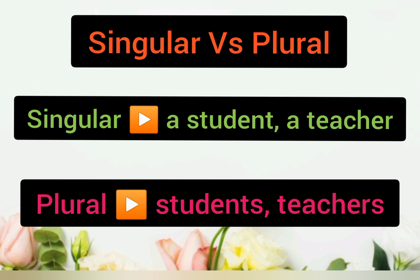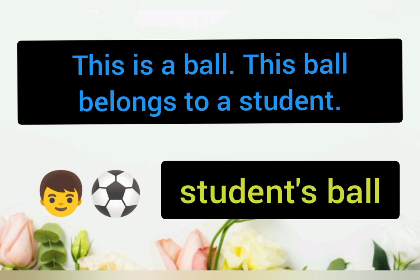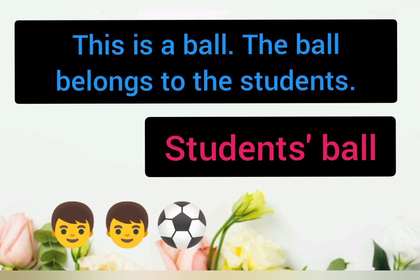Let's look at the example. This is a ball. This ball belongs to a student — kita nak kata bola ini kepunyaan satu murid — so we call it student's ball. How about if there are more than one students? So students, apostrophe, ball. Kita hanya perlu tambah koma di atas — students' ball.